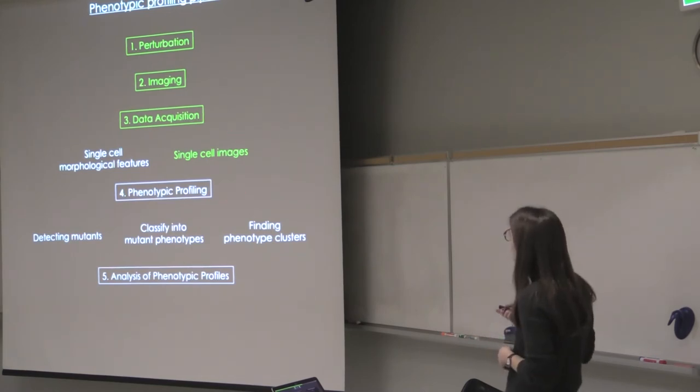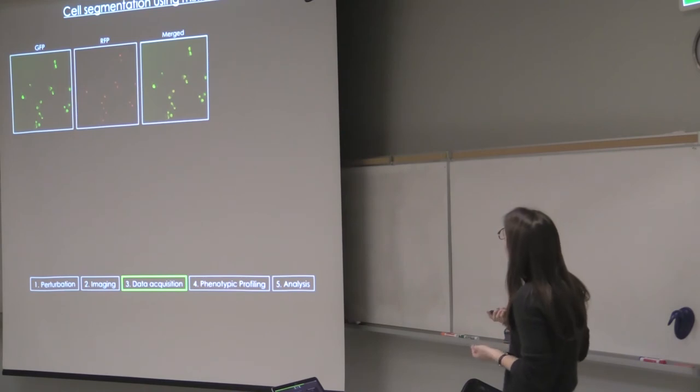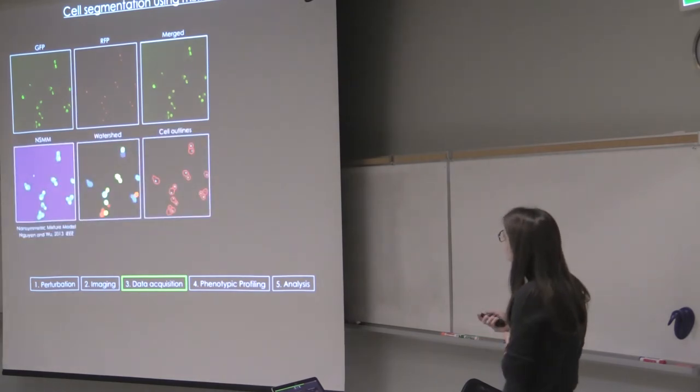So how are we extracting the single cell images? So we've implemented a mixture model. And we're looking at the whole cell images. And from there, we're applying a non-symmetric mixture model to basically identify three pixel classes: the nucleus, cytoplasm, and background. And from there, we can find individual objects.